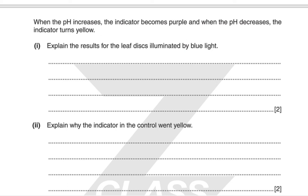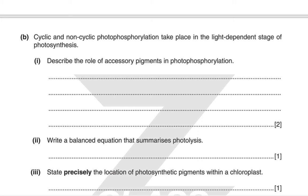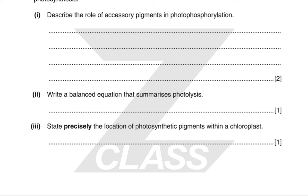Cyclic and non-cyclic phosphorylation take place in the light-dependent stage of photosynthesis. Describe the role of accessory pigments in photophosphorylation. Accessory pigments absorb light and pass the energy from that absorbed light into the primary pigment, into the reaction centre. Write a balanced equation that summarises photolysis. Water is split: 2H₂O → 4H⁺ + 4e⁻ + O₂. Precisely state the location of the photosynthetic pigments: they are found in the thylakoid membranes within the chloroplast.